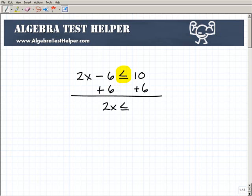Let me write that a little bit better. 2x is less than or equal to 16. So to solve for x, all I need to do is divide both sides by 2, and I get x is less than or equal to 8.